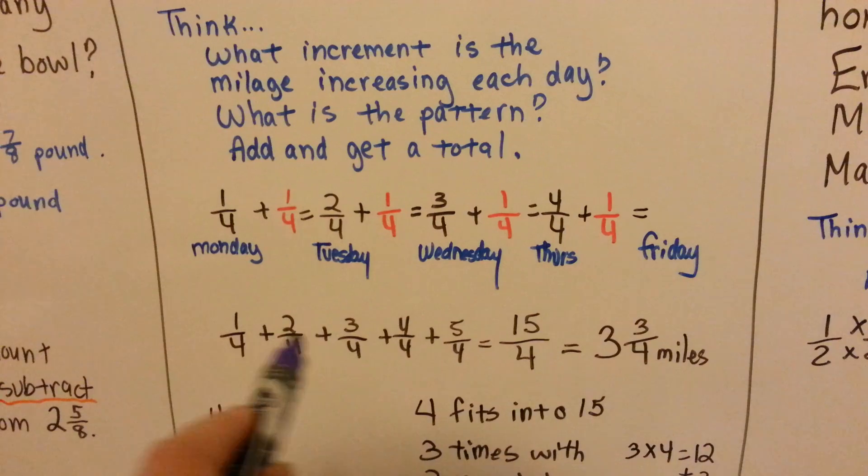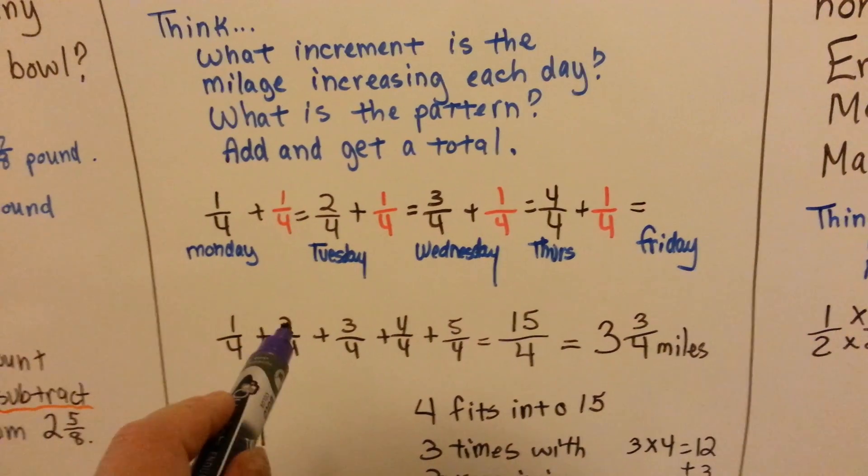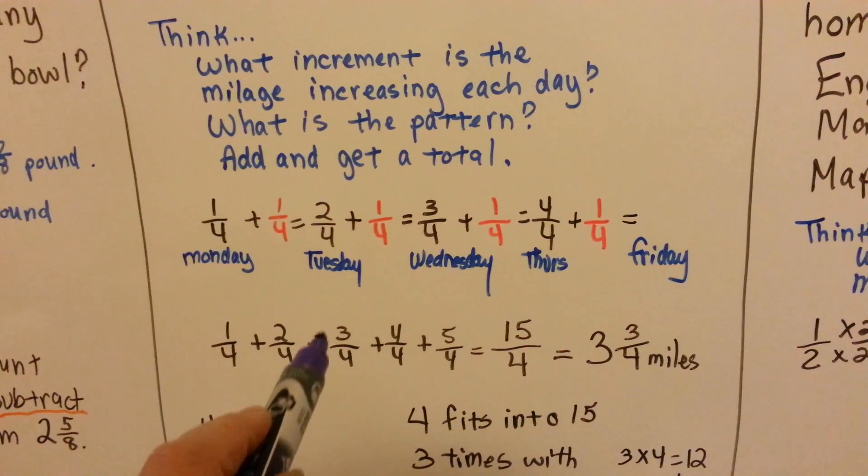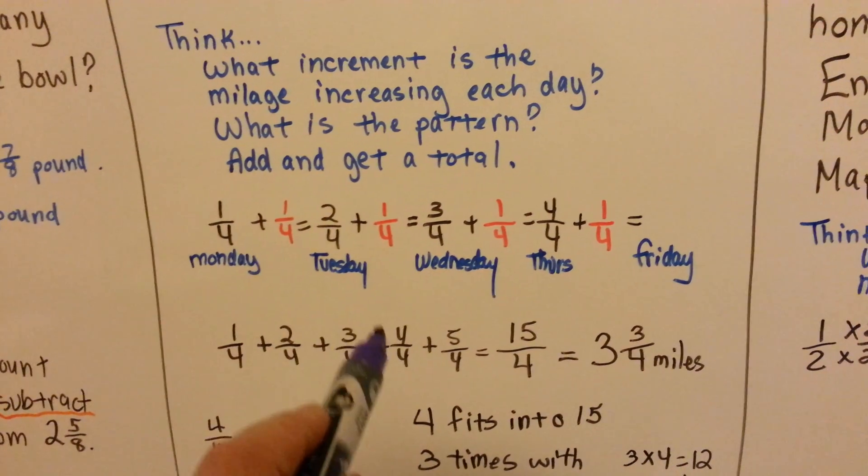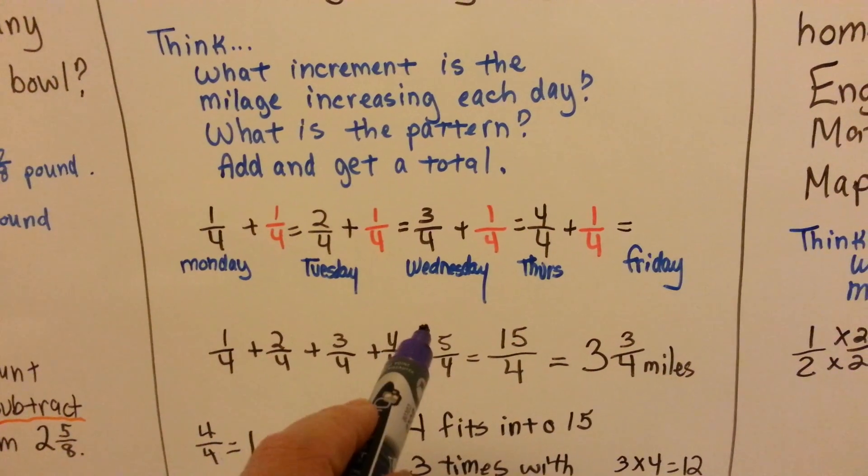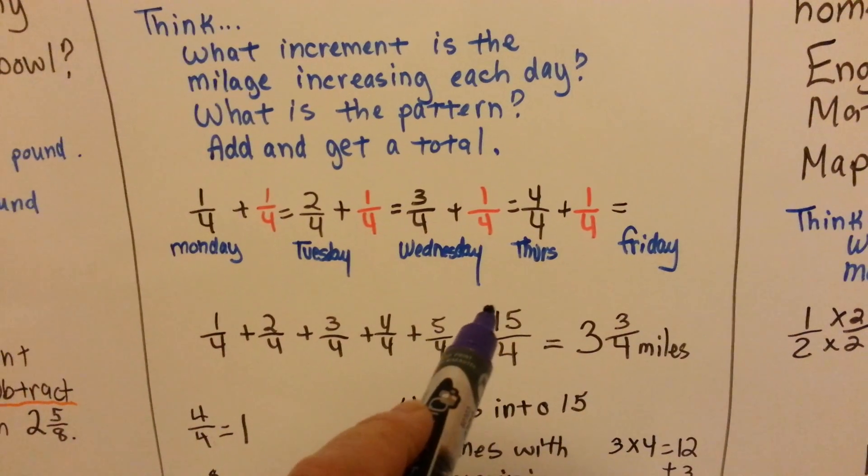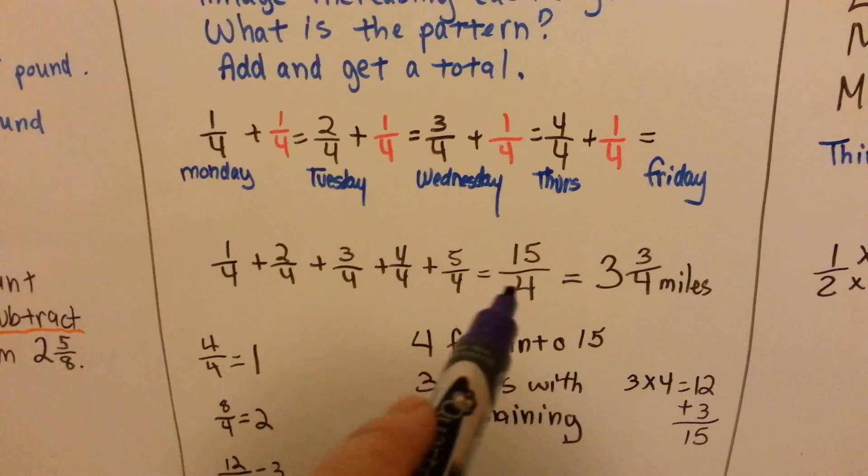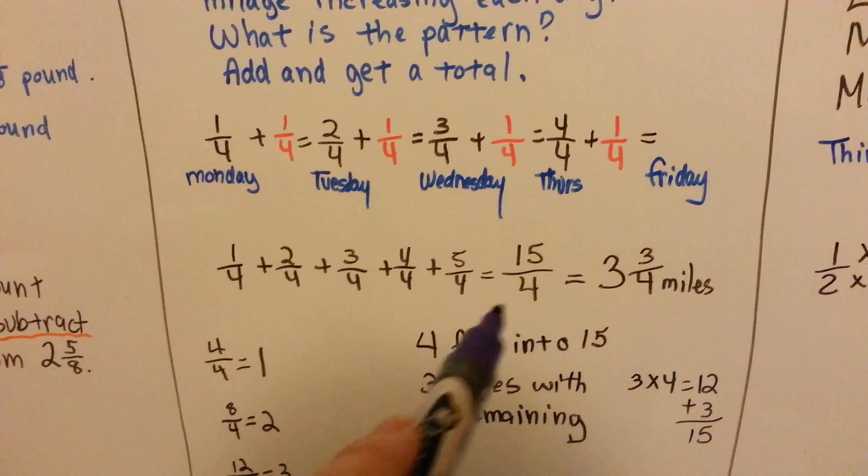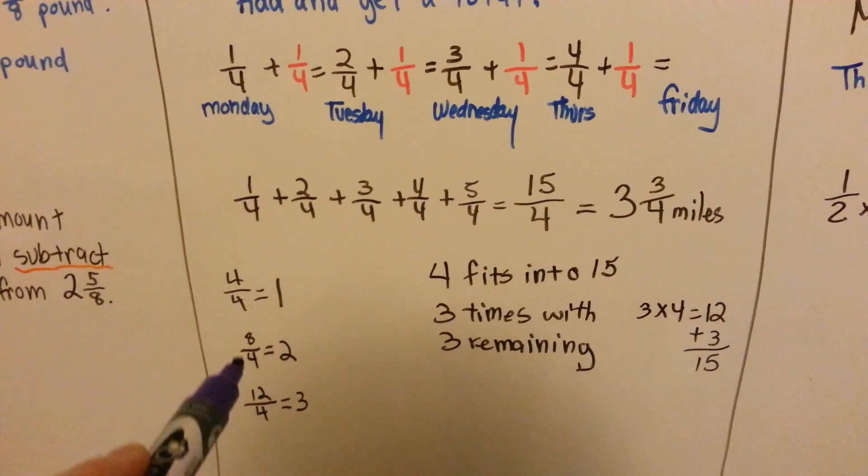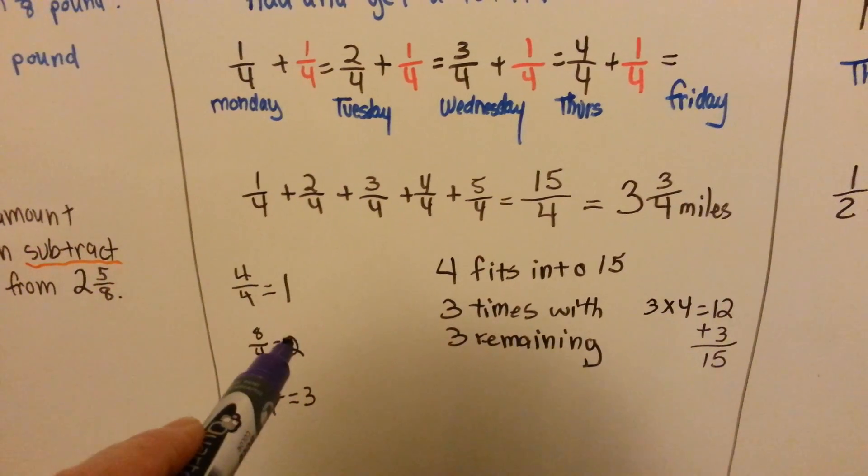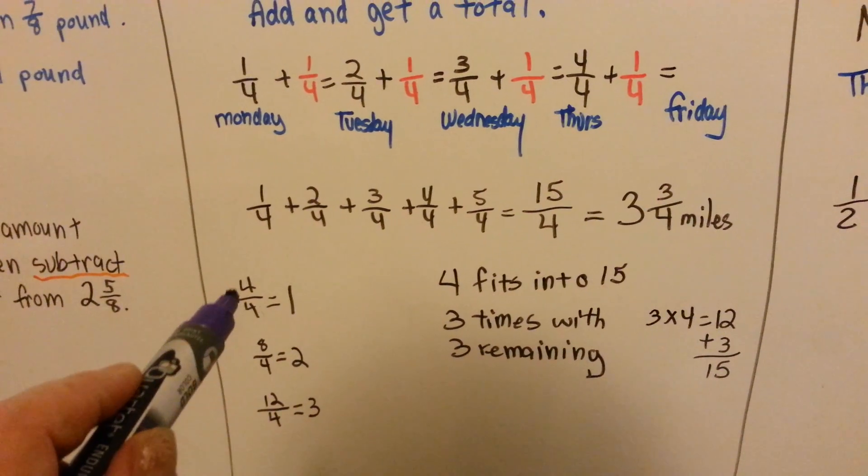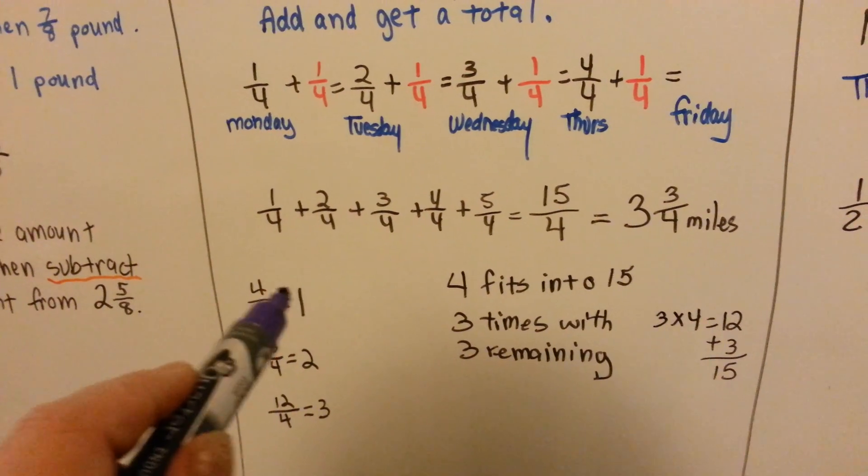We add these fourths all up together and we get 1 plus 2, because we're going to add the numerators. 1 plus 2 is 3, plus 3 more is 6, 6 plus 4 is 10, and 10 plus 5 is 15. Now we have an improper fraction of 15 fourths. We ask, how many times does the 4 fit into 15? Because 4 fourths equals 1, 8 fourths is going to equal 2, and 12 fourths is going to equal 3. Every 4 fourths that we have is equal to 1 whole.